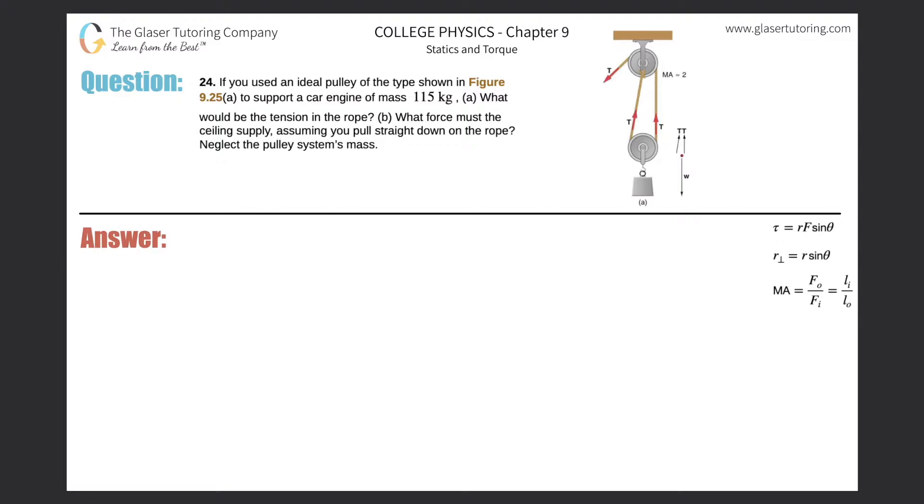Number 24: If you use an ideal pulley of the type shown in Figure 9.25a to support a car engine of mass 115 kilograms, letter A, what would be the tension in the rope? All right, so here's our picture.